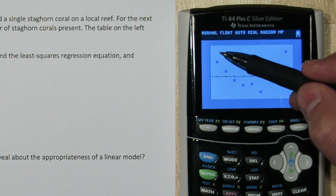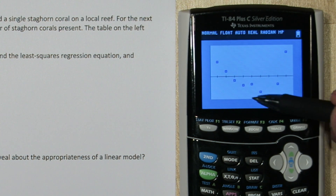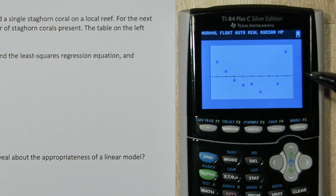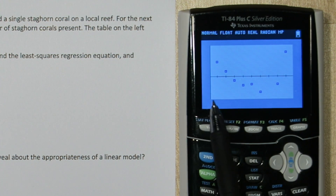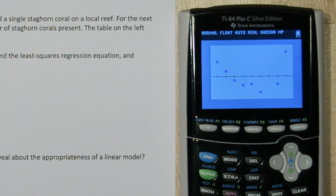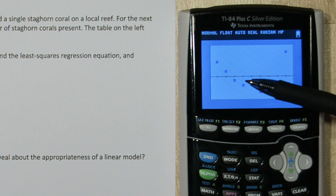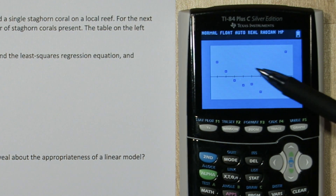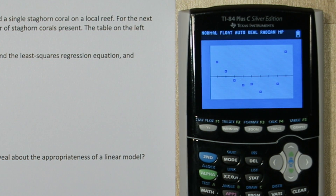We can see this U or W shaped pattern. On this residual plot, the horizontal axis is our model. So what that means is in the beginning years, our model tends to under predict the number of staghorn corals. Then in the middle years, it over predicted them. And finally, at the end, it was under predicting them again. There's a pattern here, and what the pattern suggests is a linear model is not the most appropriate.